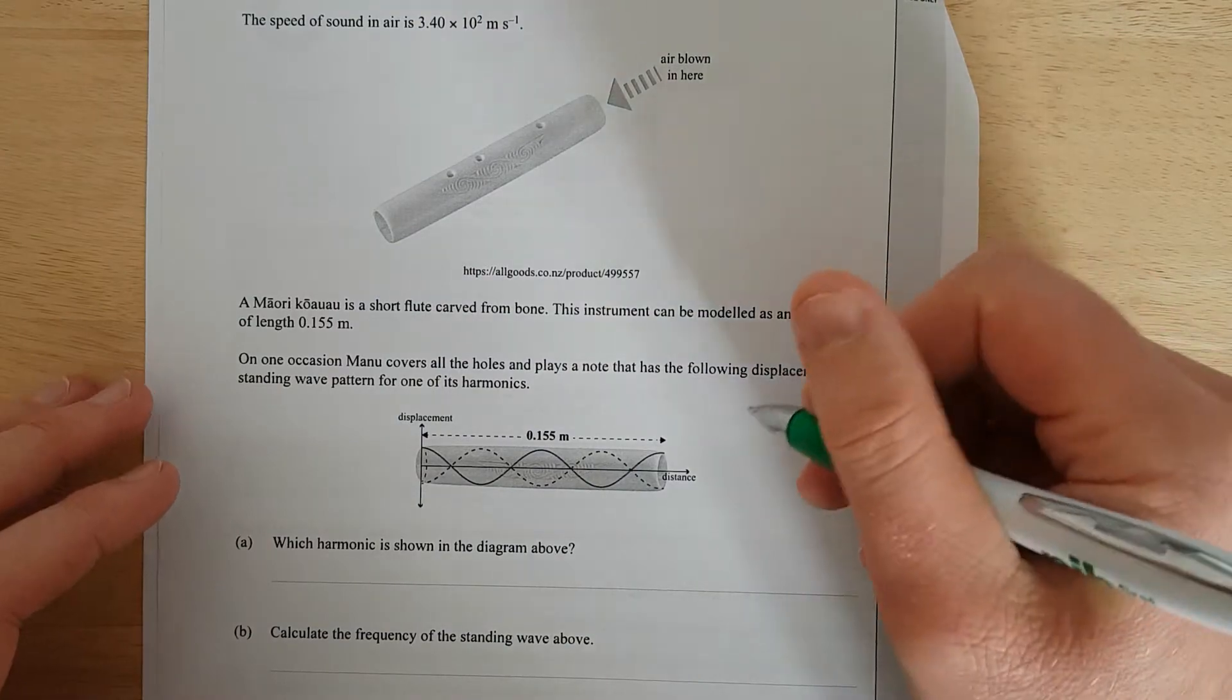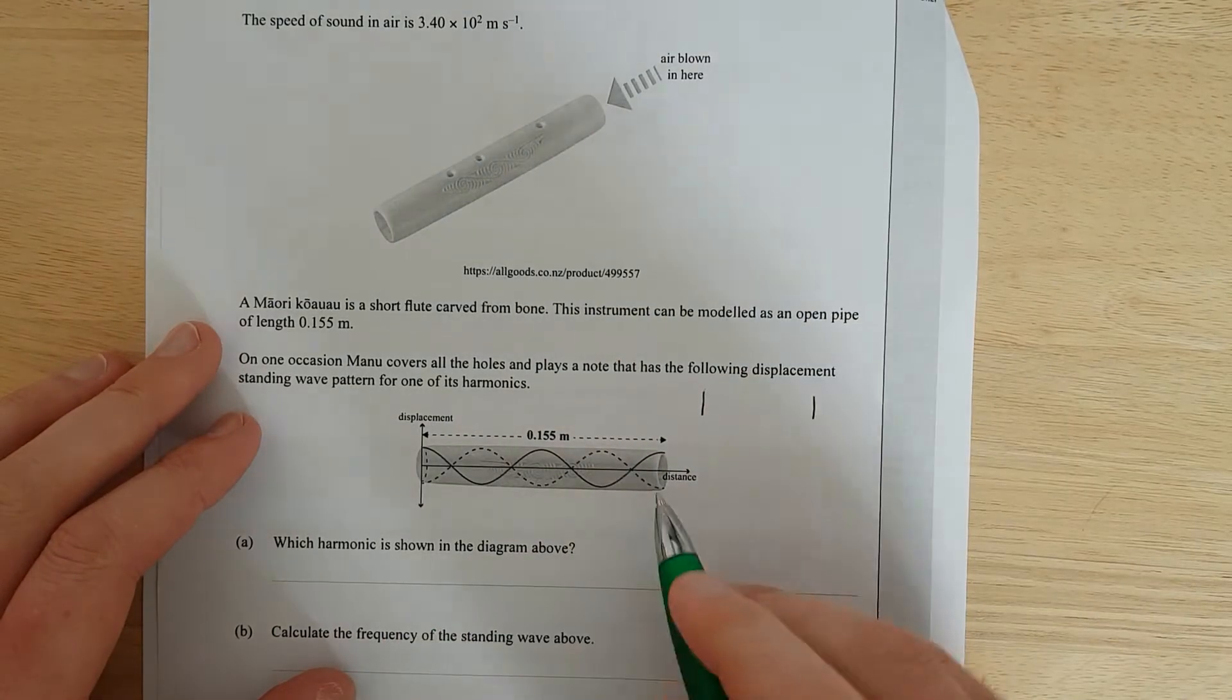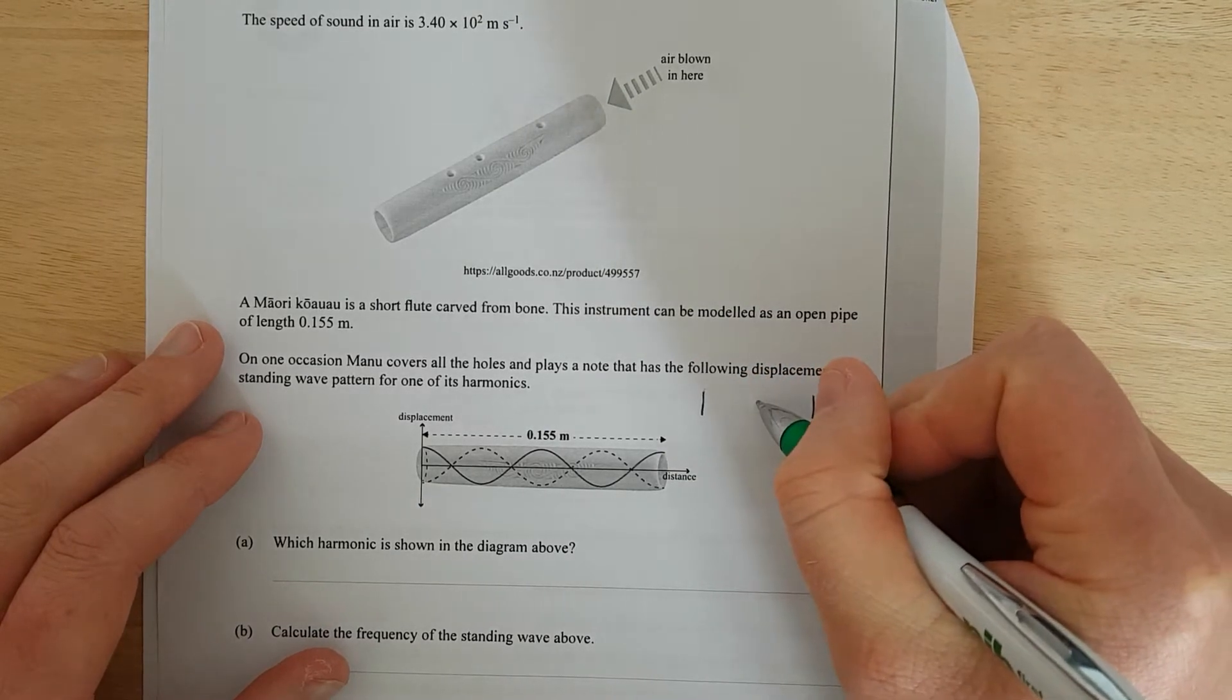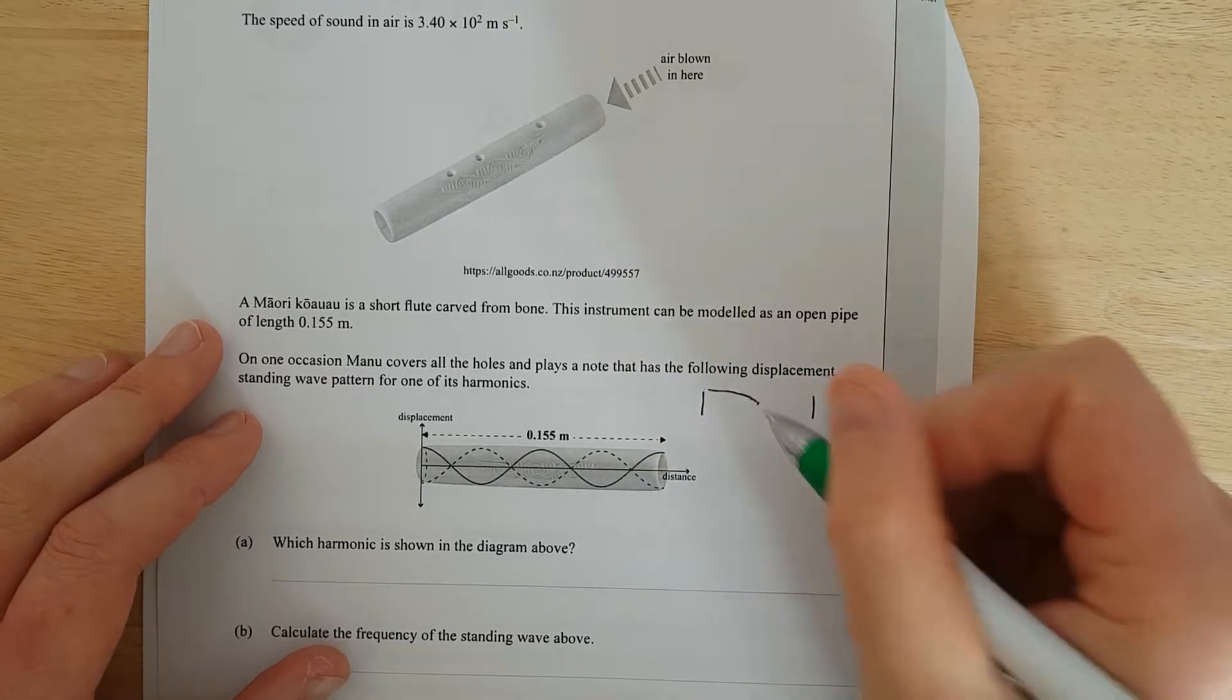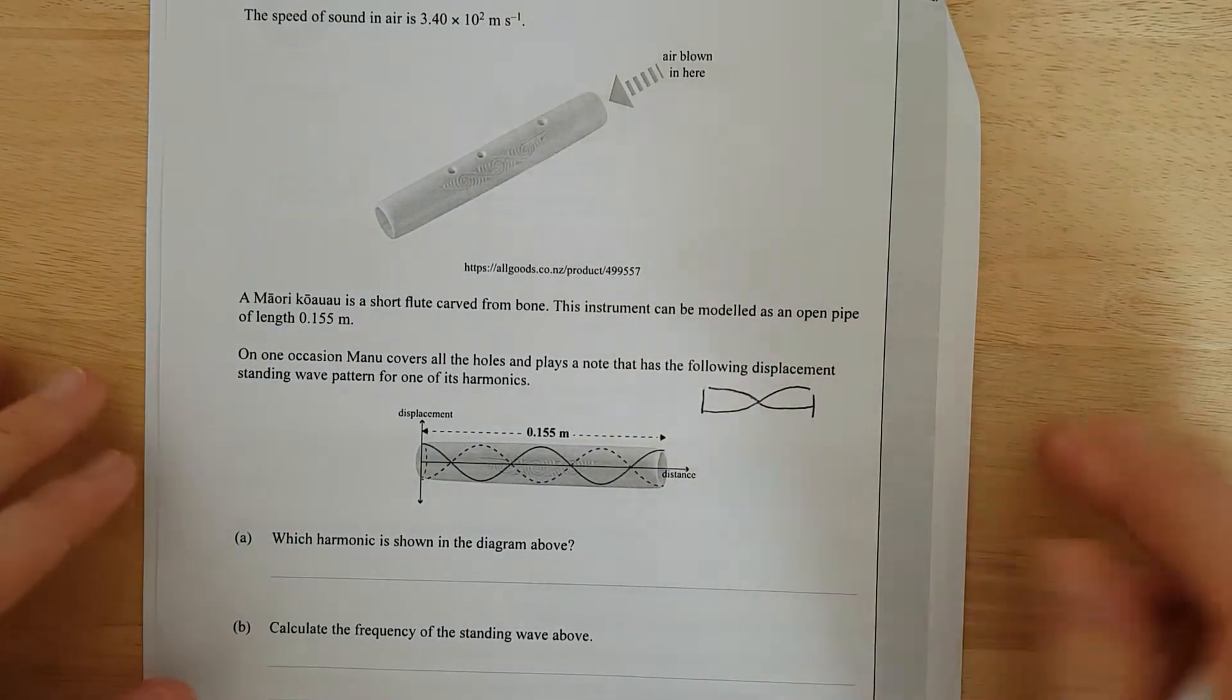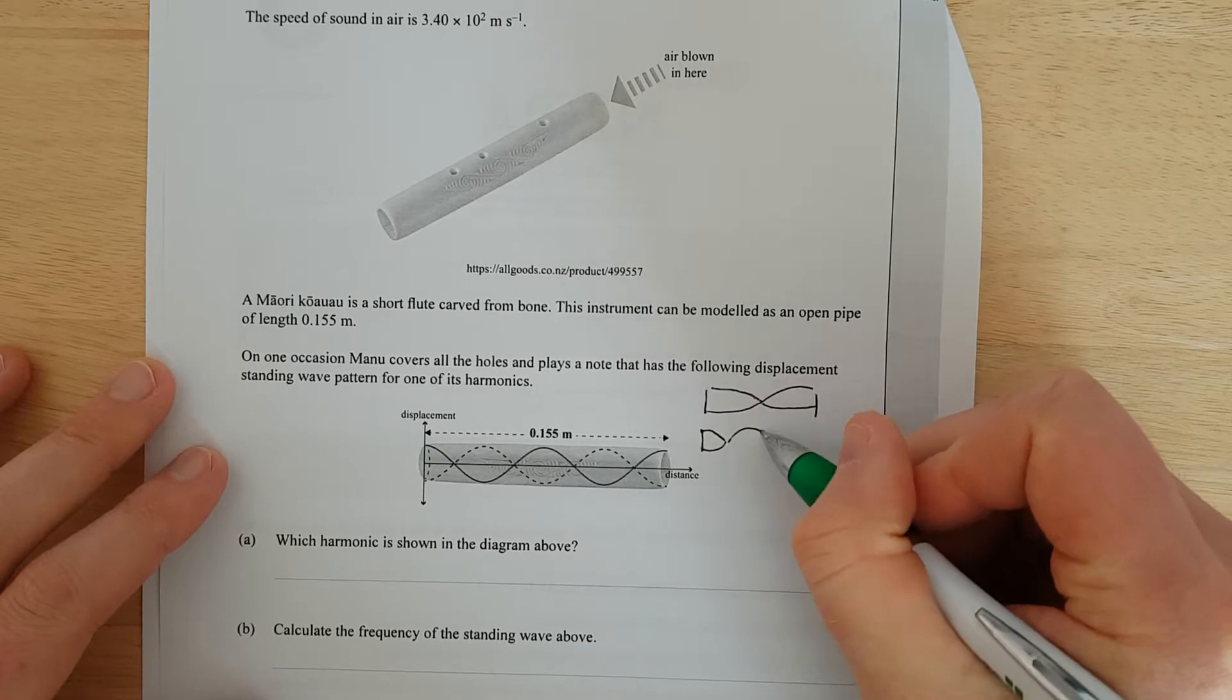So when you do these questions just draw them from first principles. The first harmonic is just going to, and this is open-open. So if we're going to have an open-open we have to have a node in the middle. And that should be open-open. This is the first harmonic.